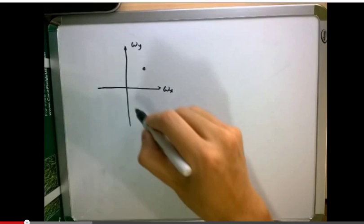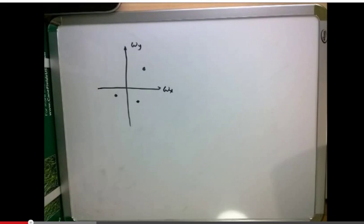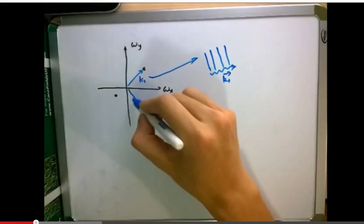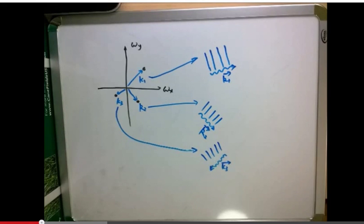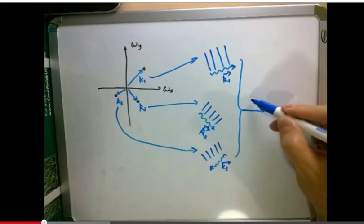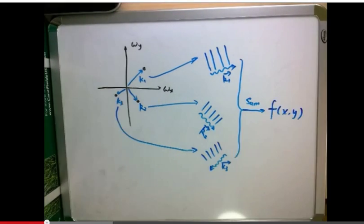Similarly, if we have the spectrum of a two-dimensional function, each point on the spectrum represents a two-dimensional wave with the wave vector k. The original two-dimensional function is equal to the sum of all the wave components.